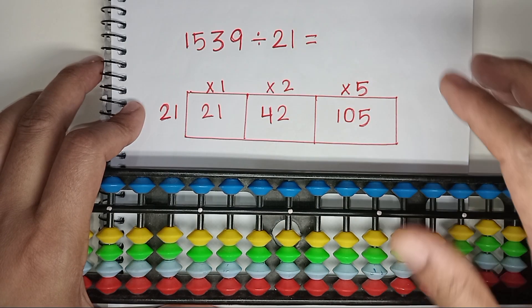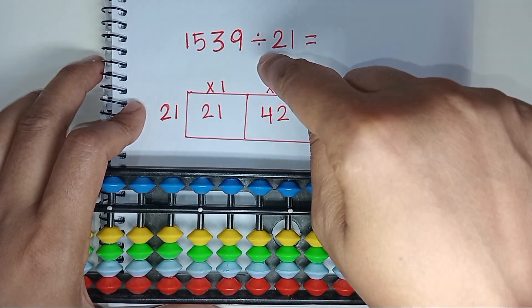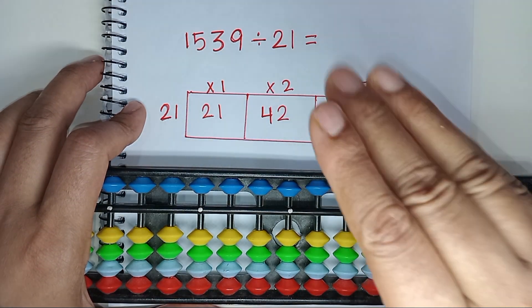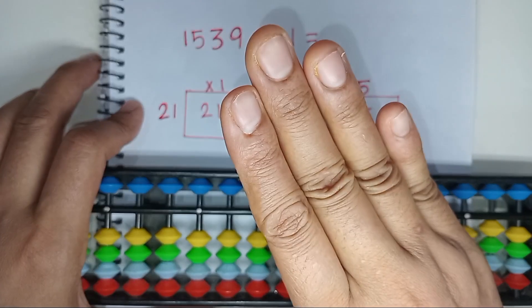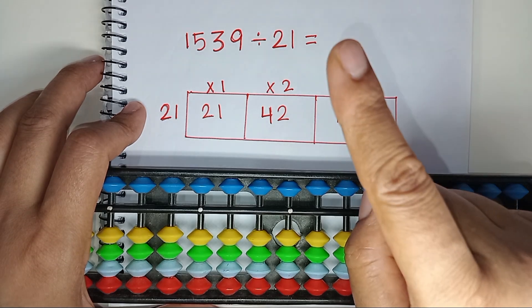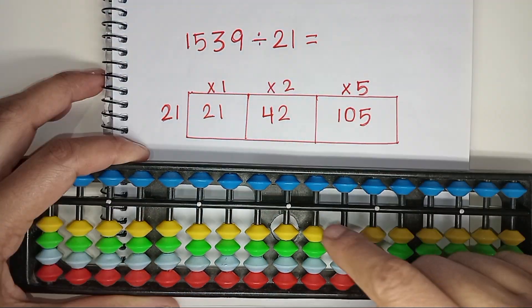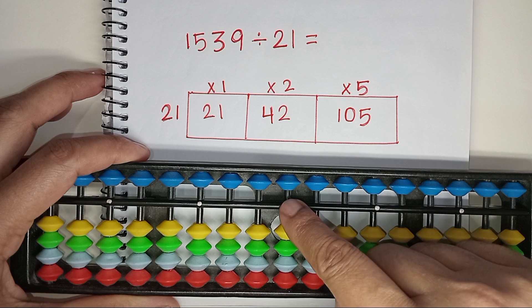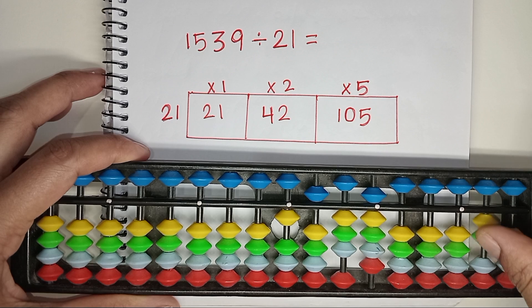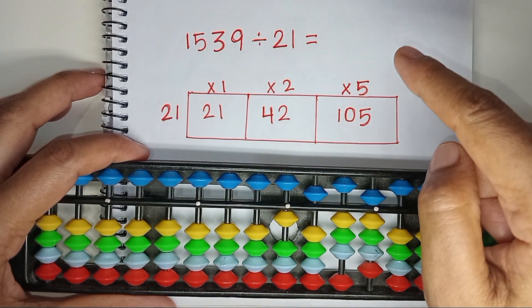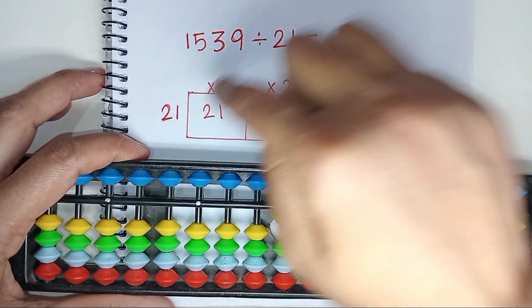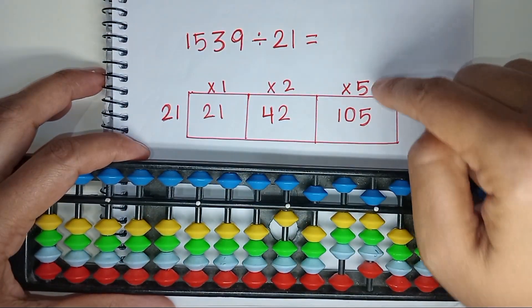The next problem is 1539 divided by 21. Here, number of digits in the dividend is 4. Number of digits in the divisor is 2. So 4 minus 2 and minus 1 is compulsory. The answer is 1. So we will start placing the actual sum or the dividend from 1's place. This is our 1's place or home point. 1, 5, 3, 9 is divided by 21. I have prepared a multiplication table of 21. 21 times 1 is 21. 21 times 2 is 42. 21 times 5 is 105.